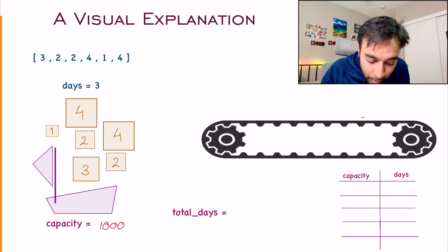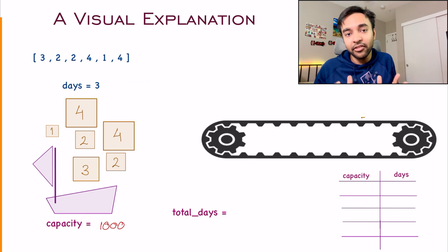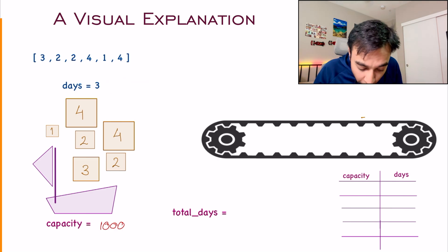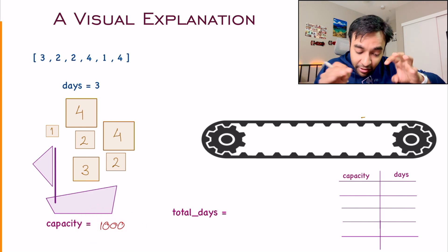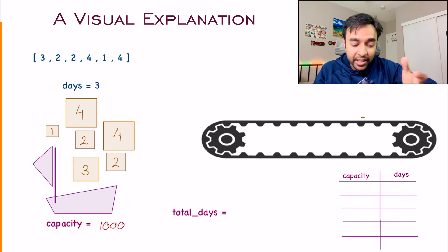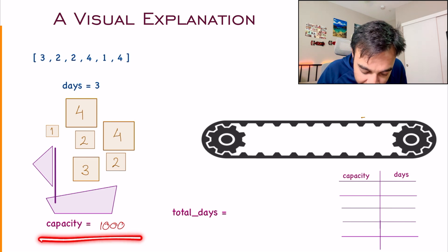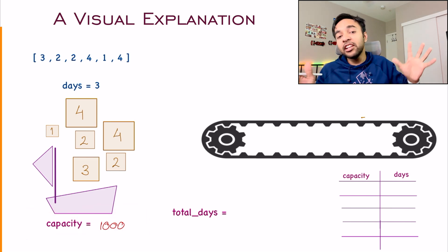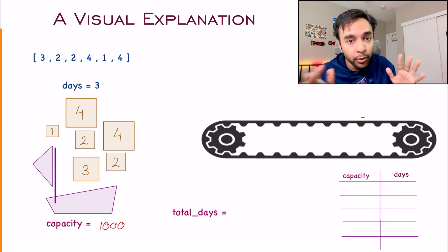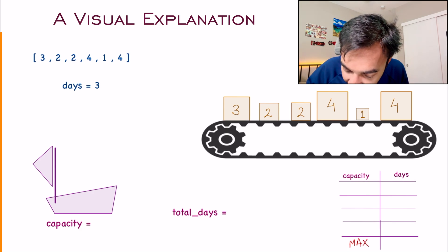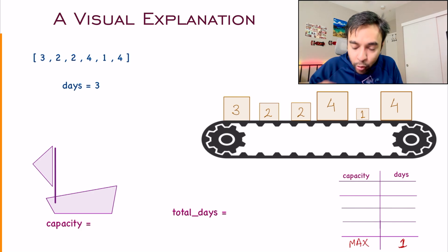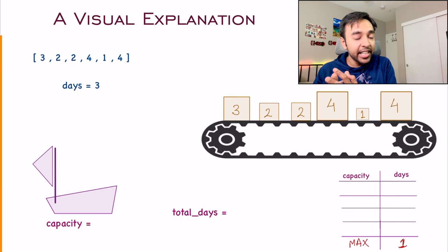So if your capacity is very large — infinite capacity — then you will only need one day to transport all of your packages. But in the problem statement, it says that we have three days available. So we want to minimize this capacity as much as possible such that we are able to ship all of these packages within three days. You get the piece of information that if you have infinite capacity, you only need one day to transport all of your packages. So it is very clear that we want a minimum capacity as much as possible.